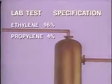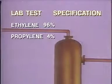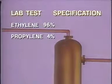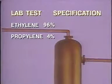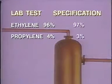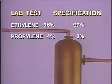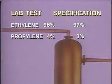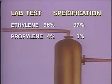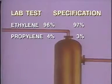For example, this column is separating propylene and ethylene, two hydrocarbons that boil at nearly the same temperature. The lighter component, ethylene, is going overhead. Specifications call for a maximum of 3% propylene in the overhead product, but lab tests indicate the top product contains 4% of this heavy key component. So the top product is off specification because it contains too much heavy material.